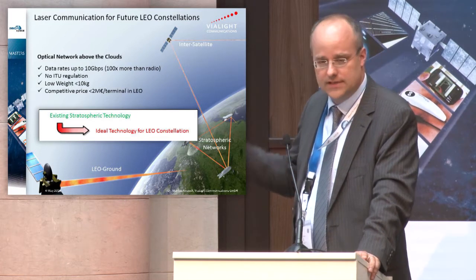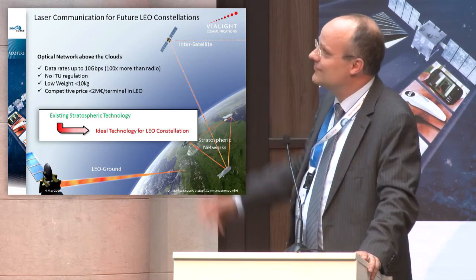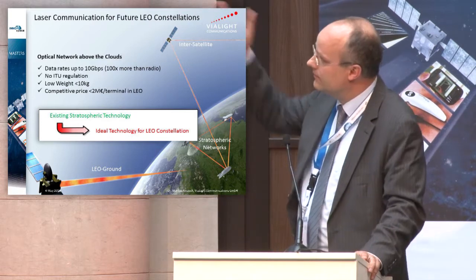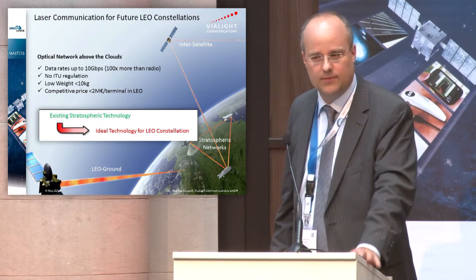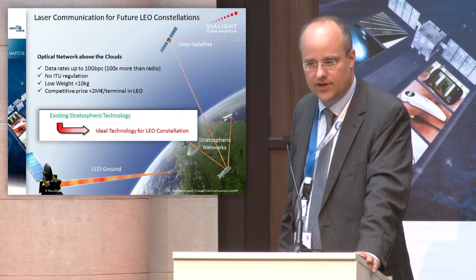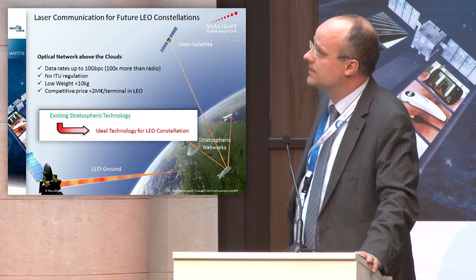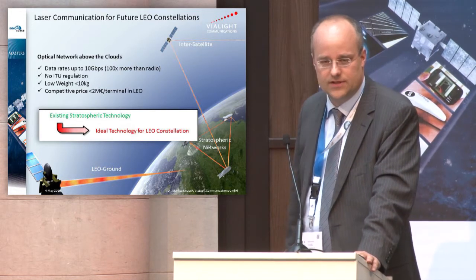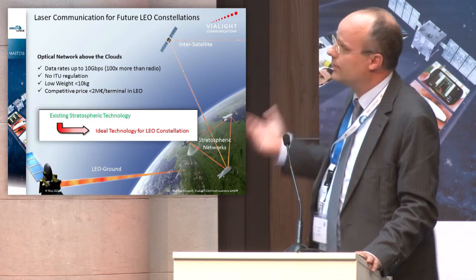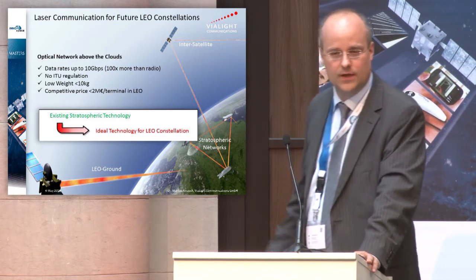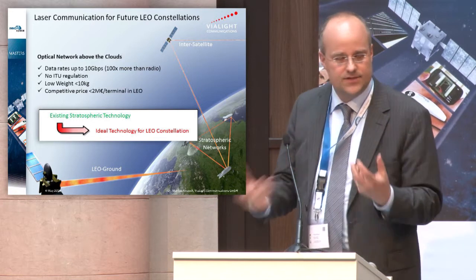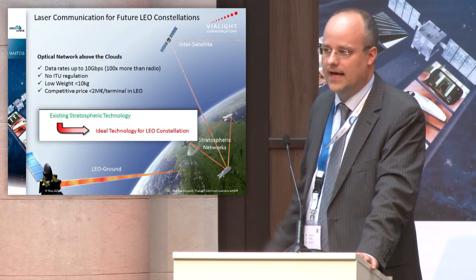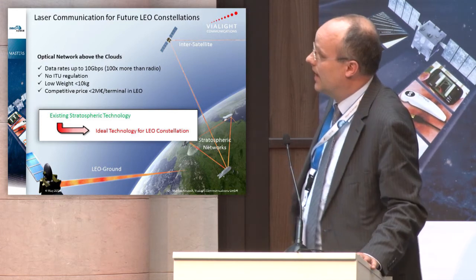This is important for these kinds of constellations — for the stratosphere and also for satellites. It is low weight: as an example, weighing 10 kilograms, which is the typical weight we have for our stratospheric platform, currently 5 kilograms. Also important is, of course, the competitive price — I have put here a number of 2 million euros per terminal for a new constellation. That depends, of course, on the requirements of the satellites, how reliable it has to be, and what number of systems you have.